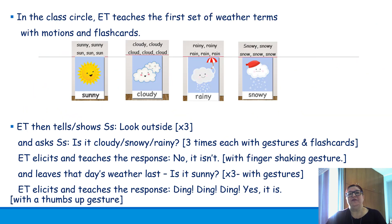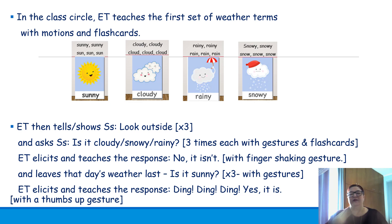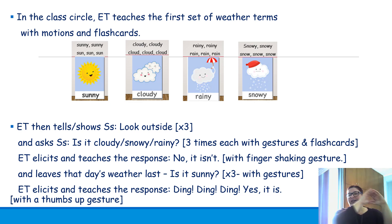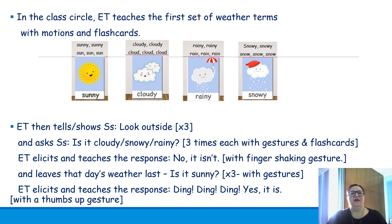The teacher would teach the first set of weather terms with motions and flashcards. For example, using the four flashcards — sunny, cloudy, rainy, snowy — the teacher would say 'sunny, sunny, sun, sun, sun' and use corresponding motions for each weather term.